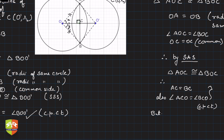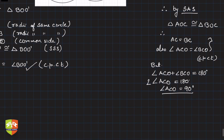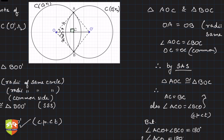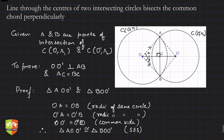We know that angle ACO plus angle BCO equals 180 degrees. Since angle ACO equals angle BCO, twice angle ACO equals 180 degrees, hence angle ACO equals 90 degrees. Hence proved — both parts are proved. OO-dash bisects chord AB because AC equals BC, meaning C is the midpoint. And angle ACO is 90 degrees, proving perpendicularity. Thus the line joining the centers of two intersecting circles bisects the common chord perpendicularly — validated on GeoGebra and now formally proved.